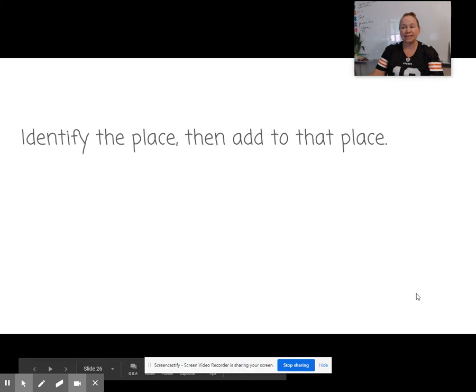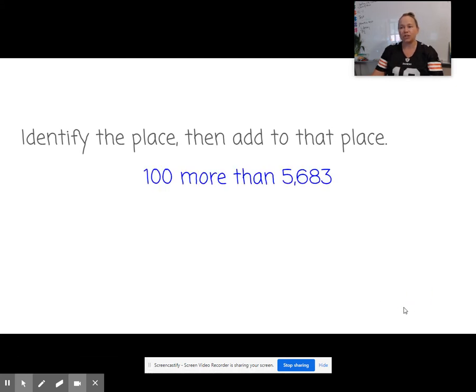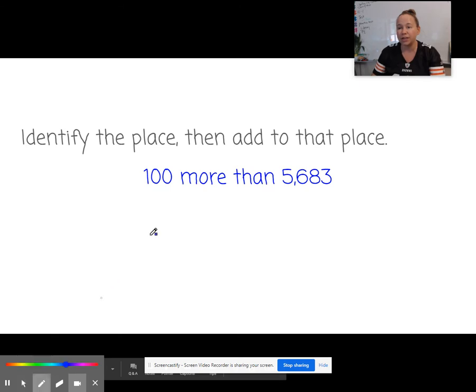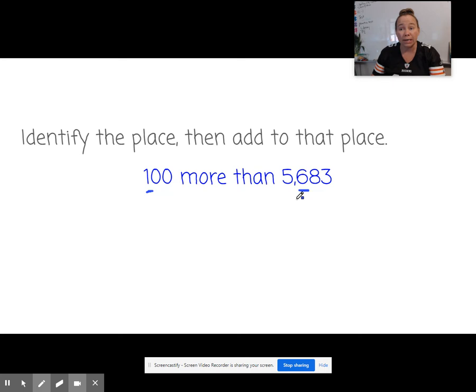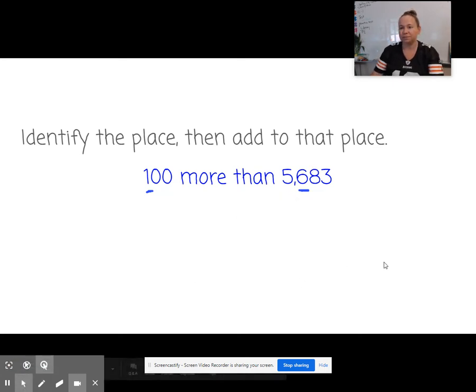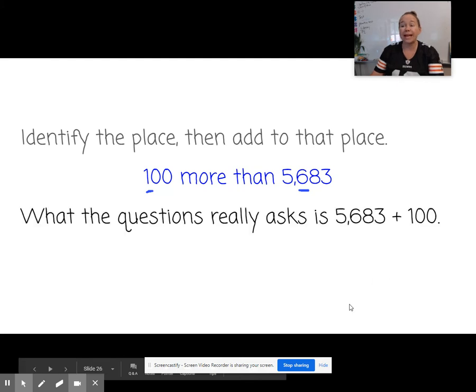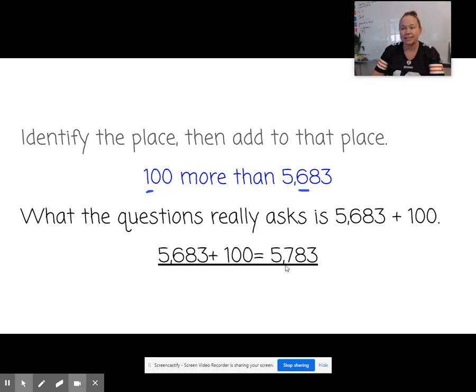Identify the place, then add to that place. So 100 more than 5,683. 100 more. Well, 100 in the hundreds is here. So we're going to add 100 to that 600. What it's really asking you is 5,683 plus 100. And you get 5,783. Because 600 plus 100 is 700.